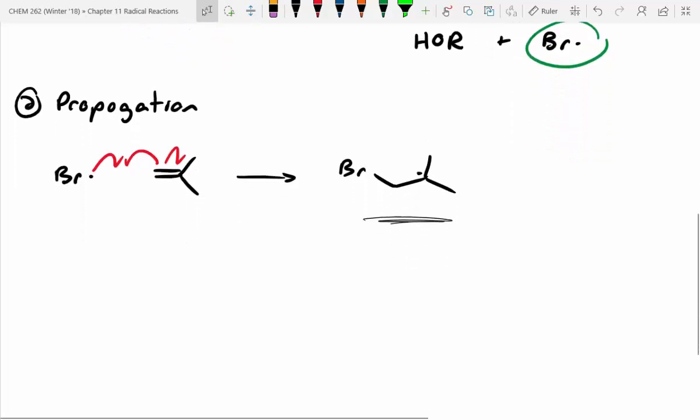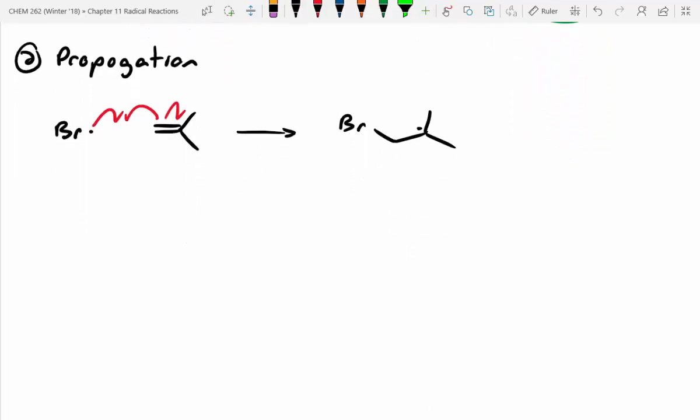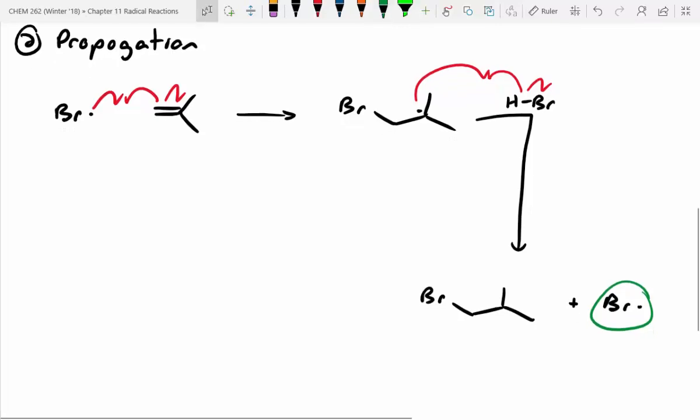So we formed our relatively stable radical, but we haven't regenerated our bromine. So in the second step, we've got hydrobromic acid floating around still. This radical will do a second hydrogen abstraction, pluck off a hydrogen, and then regenerate our bromine radical. So the key thing in the propagation step, like I said, is regenerating the radical. And then what should come next? Termination.